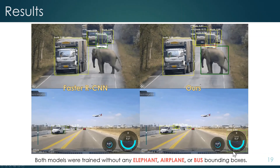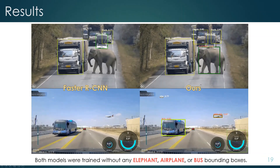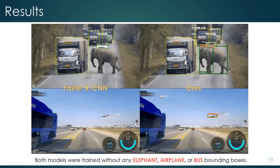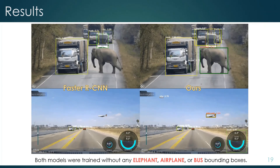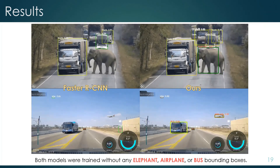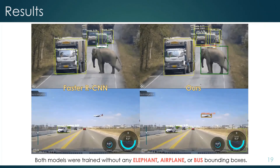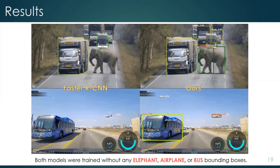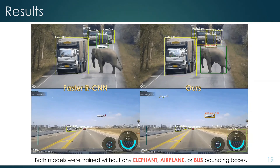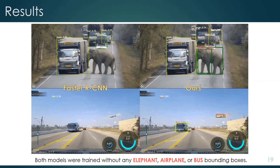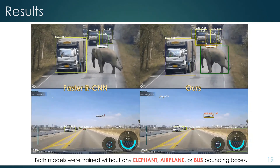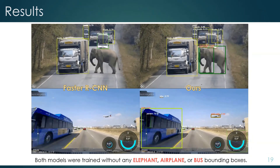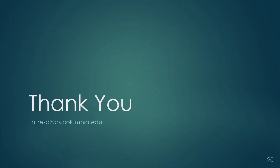Even though we didn't have any annotation for elephant, airplane, or bus, our model is able to consistently detect those in all video frames and accurately localize them, while a Faster RCNN wouldn't be able to detect any of these. Feel free to contact me for any questions. Thank you.